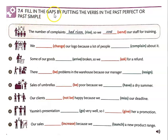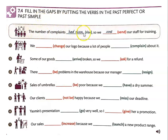In 7.4, fill in the gaps by putting the verbs in the past perfect or past simple. Refer back to the other video if you need a look at the example of past perfect or past simple, but I think you've got it. We have had — so they're giving you the verb right here in parentheses, and they're even changing the colors, so you know that if it's in red it's going to be the past simple, and if it's in green it's going to be the past perfect. So they really made this pretty simple for you.